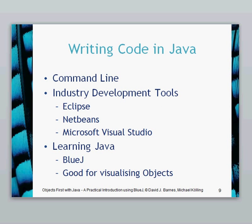You can write your Java code, and at university they used to make students write it using the command line just to show how it works — we're going to bypass that in this course, but just so you know, you can write it at the command line if you like. There are a lot of development tools for Java: Eclipse, NetBeans, Microsoft Visual Studio — used mainly for Microsoft products but can also be used to write Java. For this course, we're going to use BlueJ. It's an excellent little application for writing Java and it's extremely good at visualizing objects, as you'll see in the next video.